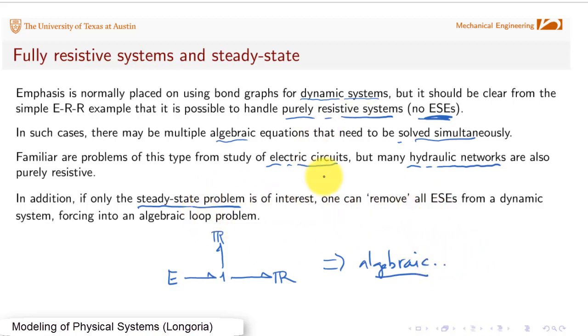Sometimes we even will build a dynamic model, remove the energy storage elements, and force this into an algebraic loop problem because we can then only solve for that steady state. We don't care about solving for the dynamics. In those cases, we force ourselves into this kind of problem. The same way we derive the equations for an algebraic loop, we can resolve, or actually derive, the equations for resistive systems or steady-state problems. That's a very valuable tool in a lot of practical problems.